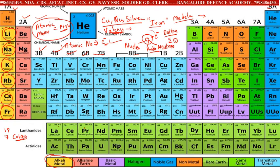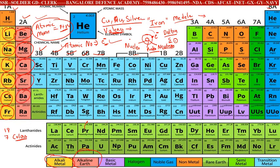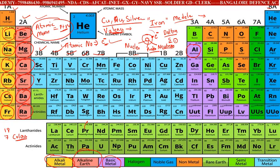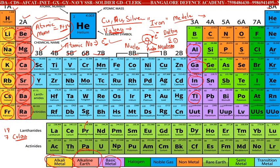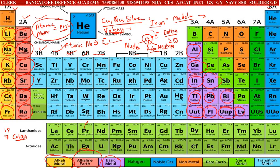Next, you have alkaline earth metals — that is beryllium, magnesium, calcium, strontium, barium, and radium. Then you have basic metals, which appear in a very light bluish color: aluminum, gallium, indium, thallium, lead, tin, bismuth. Some of the rest are artificially made. These are all basic metals.